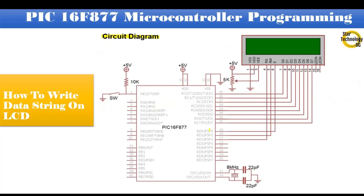Here is the circuit diagram we are using in our project. It is the PIC16F877 microcontroller. Pin number 1 is master reset — if we press the switch it will reset the microcontroller. Port C is interfaced with the LCD data pins. The LCD is a 16 by 2 character LCD; all data pins D0 to D7 are interfaced with Port C. Pin RD0 interfaces with the EN pin, RD1 with the RW pin, and RD2 with the RS pin. VSS connects with ground and VDD connects with positive 5 volts.